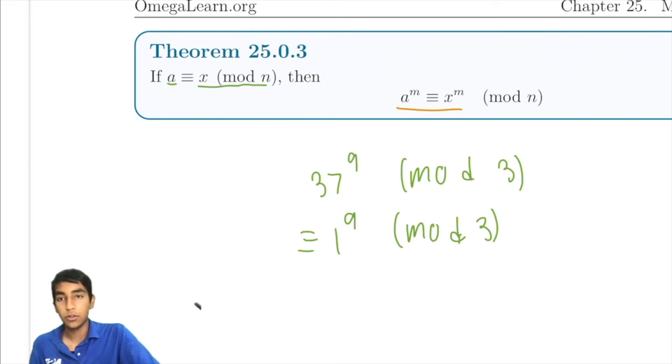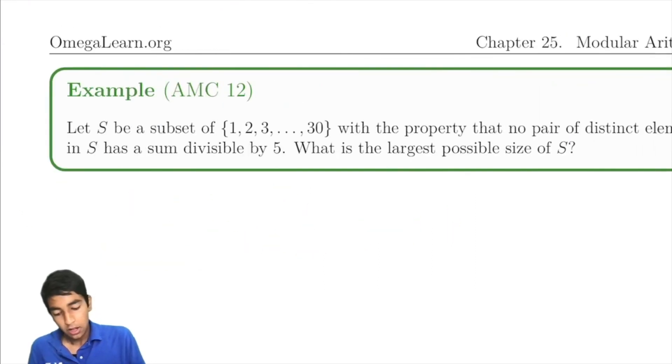Basically what that means is that because these two numbers are equivalent mod 3, then the numbers to the power of any exponent are also the same mod 3, and this is very useful.